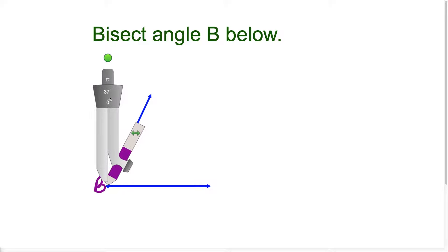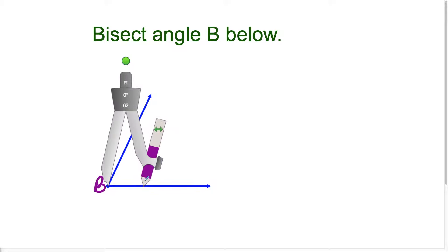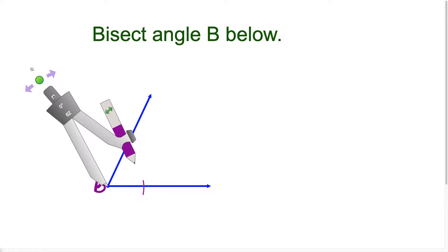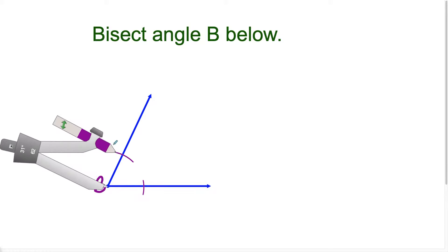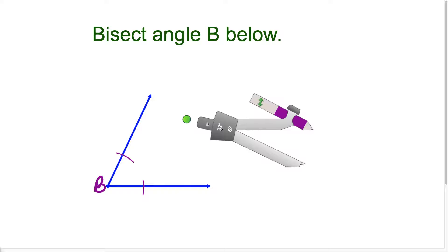We want to bisect angle B. I'm going to place the compass on this vertex and open it up and swing an arc so that it hits one of the rays. I'm not changing the length of the compass at all for this part. I swing a second arc and notice that I intersected the angle at two locations. We'll call this point A and this one point C.